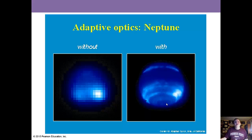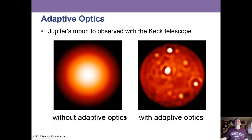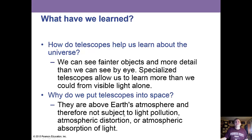You can see Neptune without adaptive optics on the left and with it on the right for a sharper view, and Jupiter's moon Io shows the same improvement. Telescopes help us learn about the universe by letting us see fainter objects and more detail than the naked eye. Specialized telescopes allow us to learn more than visible light alone, and space telescopes are above Earth's atmosphere, free from light pollution, atmospheric distortion, and atmospheric absorption of light.